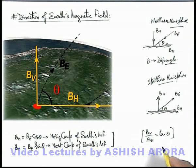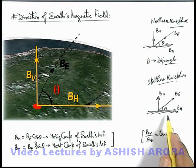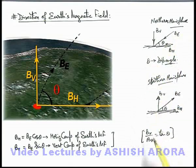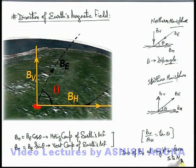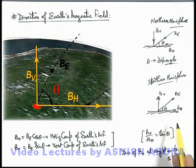We can also write the relation between the two components as B-V divided by B-H equals tan(theta). At every point, B-H is in the direction from south to north, because in the southern hemisphere the field is originating and in the northern hemisphere it is terminating. So the direction of B-H at any point is from south to north. These analyses are quite helpful in solving different problems related to terrestrial magnetism wherever you need to find the directions of different components of Earth's magnetic field.